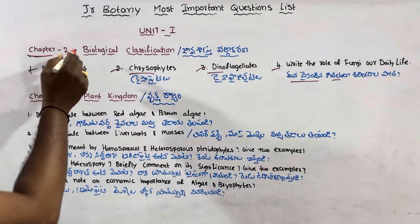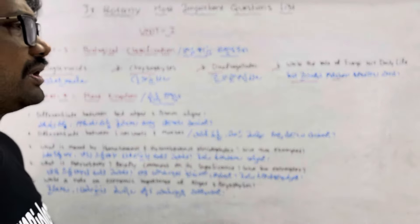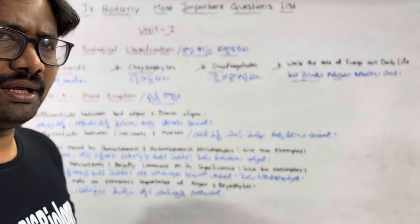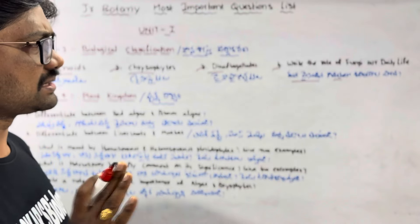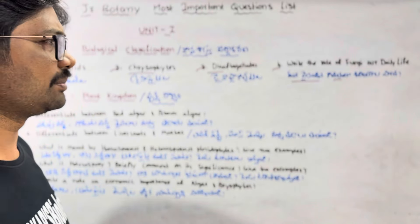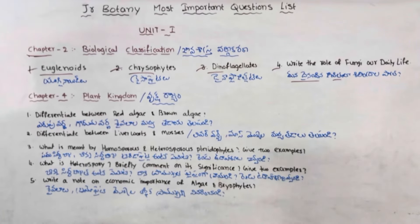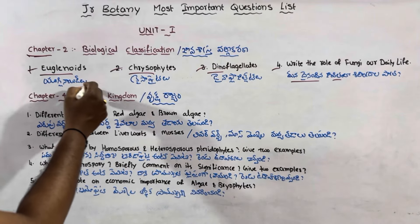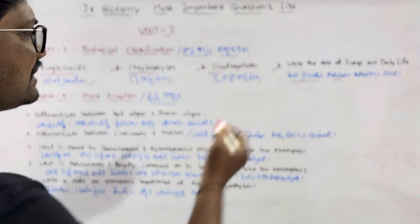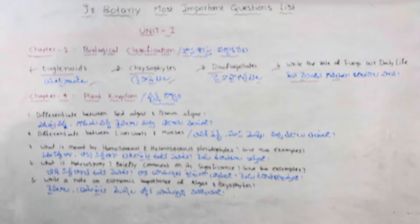Chapter 2, Biological Classification, is most important. The key organisms to study are Euglenoids, Chrysophyta, Dinoflagellates, Dinomines, and related topics. These form the core of the Chapter 2 important questions for the public examination.